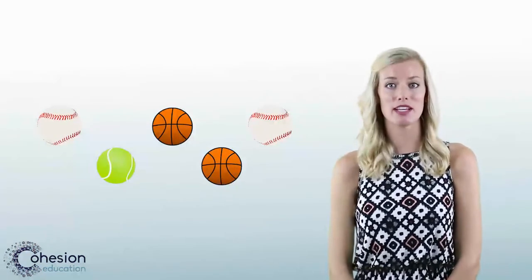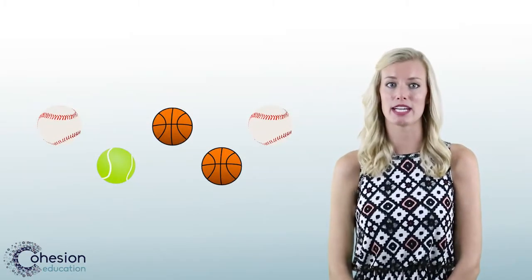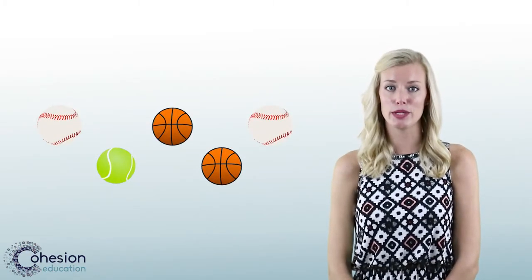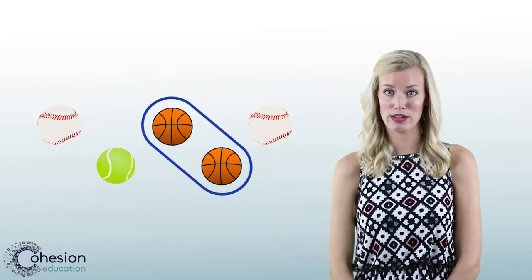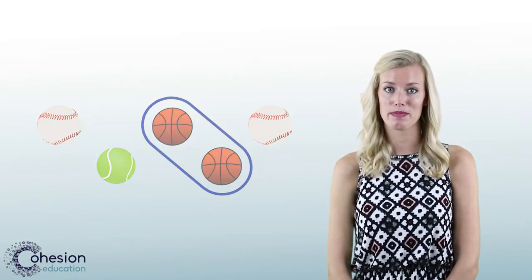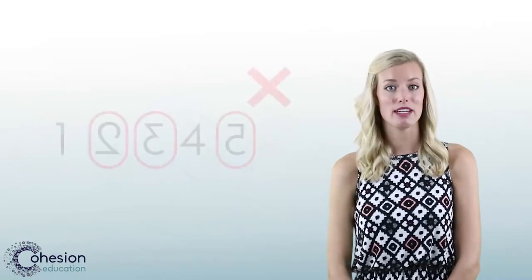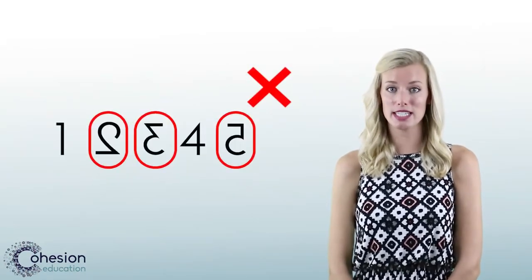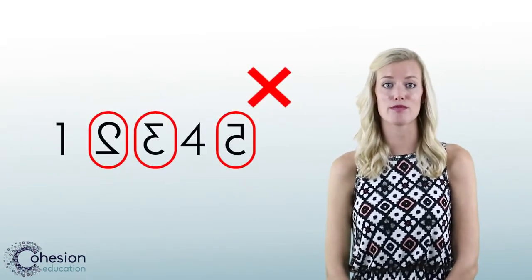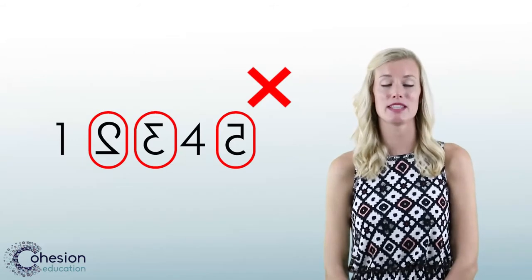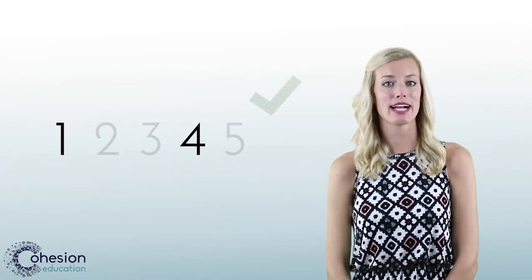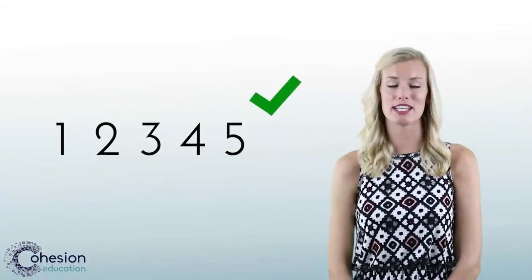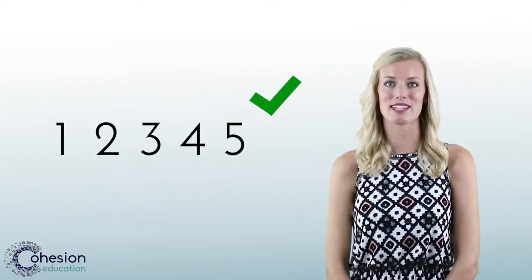Students might look at a group of objects and say there are two because they see two basketballs. Remember, it is common to continue to see students write numbers backwards in the beginning stages. Practice tracing the numbers and repeating the steps aloud.